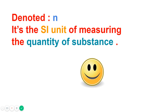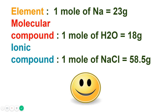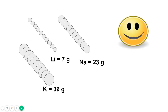For an element, one mole of sodium is 23 grams. For a molecular compound, one mole of water has 18 grams of particles. For an ionic compound, one mole of sodium chloride is 58.5 grams. So the mass expressed in grams is one mole. Different compounds and elements have different masses but the same number of particles.